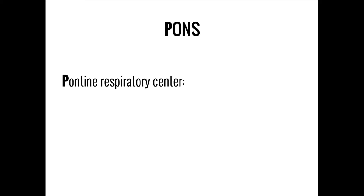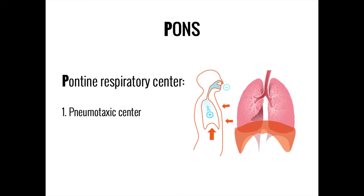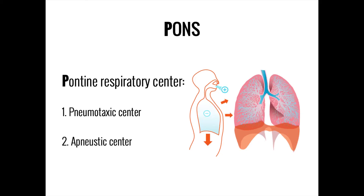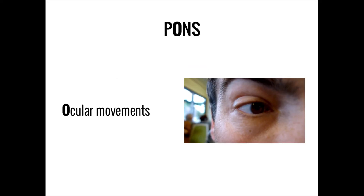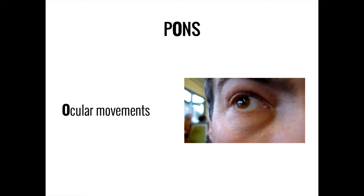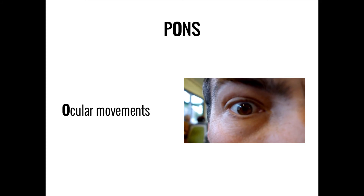The pontine respiratory center is made up of two sub-areas. The first is the pneumotaxic center, which stops inspiration when the lungs have stretched too far, while the second is the apneustic center, which promotes inspiration when the lungs are empty. Cycling between these two centers creates the usual rhythm of breathing. O is for ocular movements: within the pons is the paramedian pontine reticular formation, which is partially responsible for controlling eye movements. Damage here produces a weakness of eye movements known as a gaze palsy.